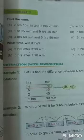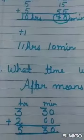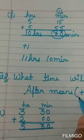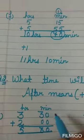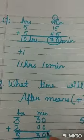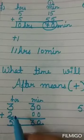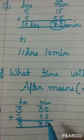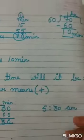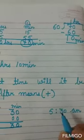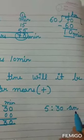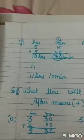इसके लिए एक बात ध्यान में रखनी है: after means plus। जब question में 'after' आता है, means you have to add। तो 3 hours 30 minutes, plus 2 hours: 5.30 बना, और A.M. था, तो answer भी 5.30 A.M. आएगा। 3:30 था सुबह का, और 2 hours के बाद 5:30 हुए, तो वो भी A.M. रहेंगे। This is the answer of part A.